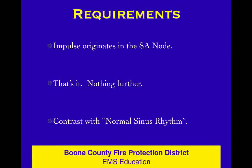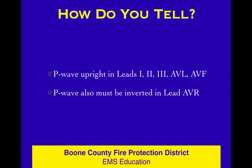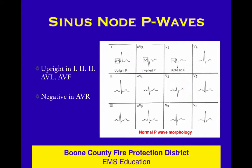You can have a sinus rhythm with lots of things. How do you know if it's a sinus rhythm? The P wave is upright in leads 1, 2, 3, AVL, and AVF, and it also must be inverted in AVR. That is normal — to have an inverted P wave in AVR. It is a sinus rhythm if these things are true. Sinus node P waves: upright in 1, 2, 3, AVL, AVF; negative in AVR.